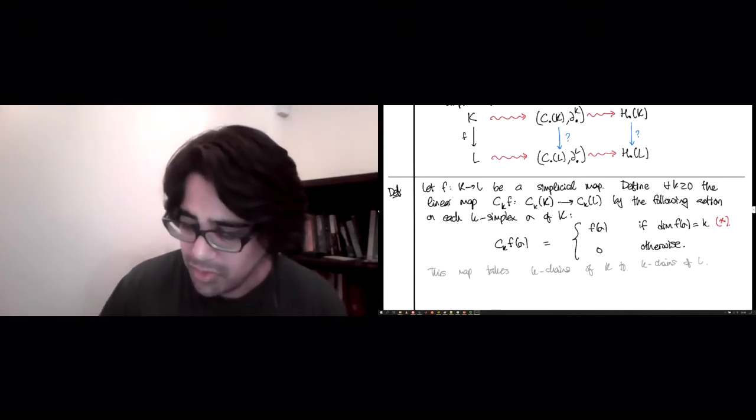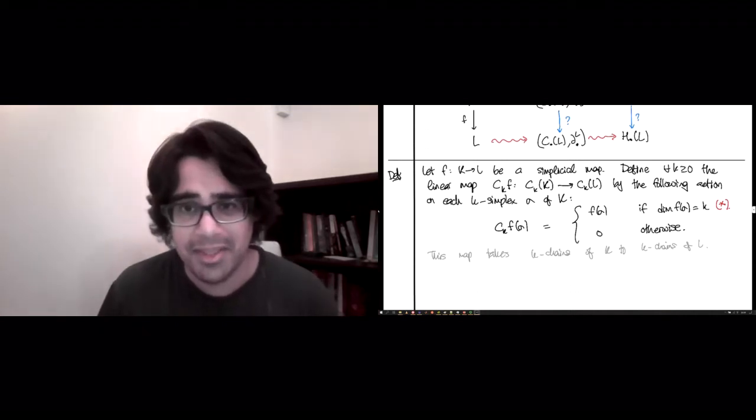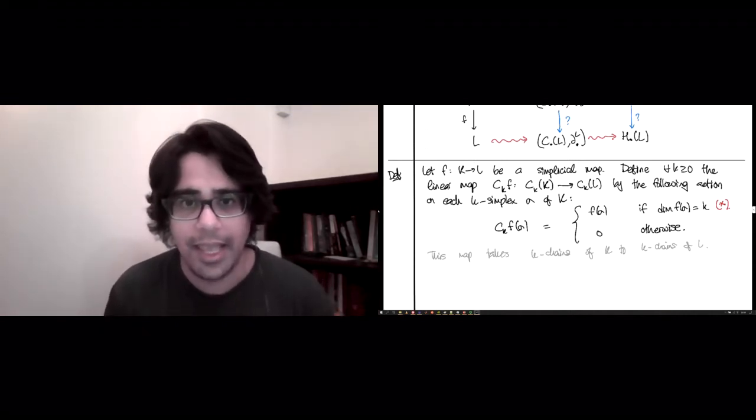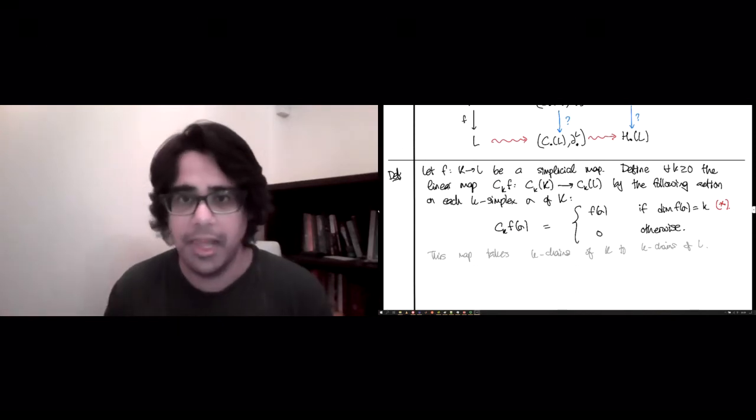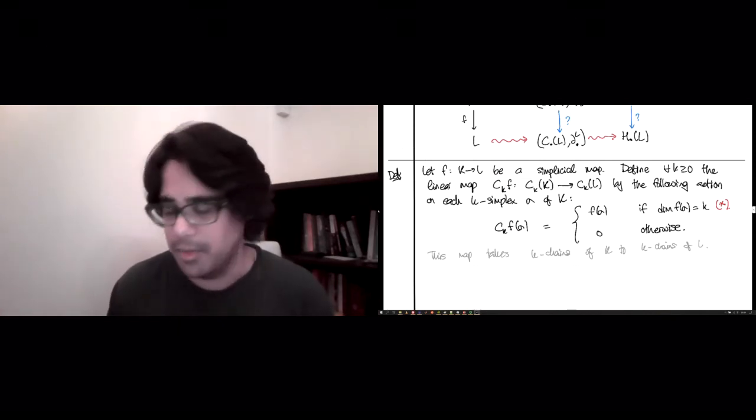So using a fairly simple recipe, I mean, this is the easiest way you could have used f to take chains in K and produce chains in L. You just apply f to the simplices and add things up. Great.